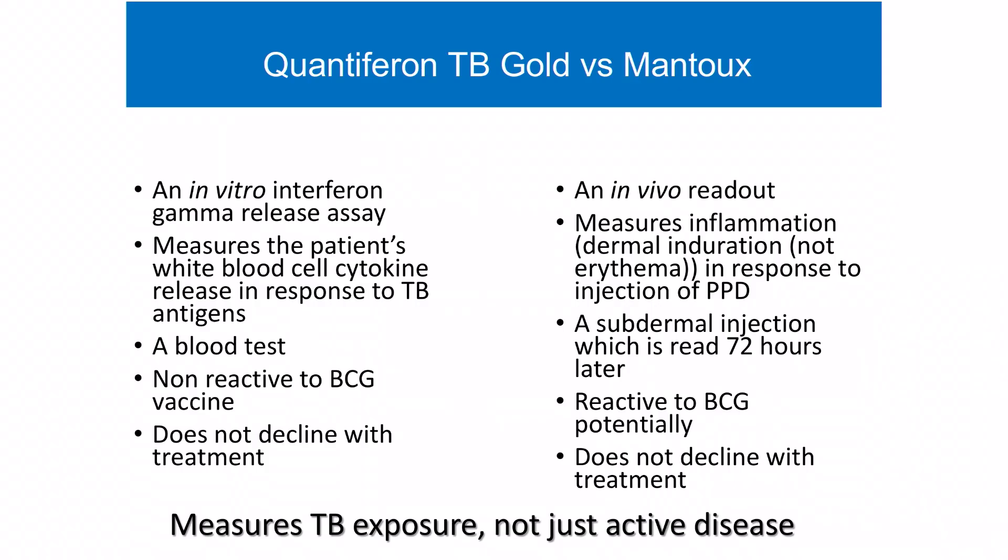There are two types of tests available for the diagnosis of latent TB, which are the interferon gamma release assays and the tuberculin skin test. Both of these tests are recommended for the diagnosis of latent TB by Australia's National TB Advisory Committee, so understanding something about how they work and their strengths and limitations is helpful for deciding which you're going to use. You'll see here that I've called them the Quantiferon TB Gold and the Mantoux test, which are the versions currently available in Australia.